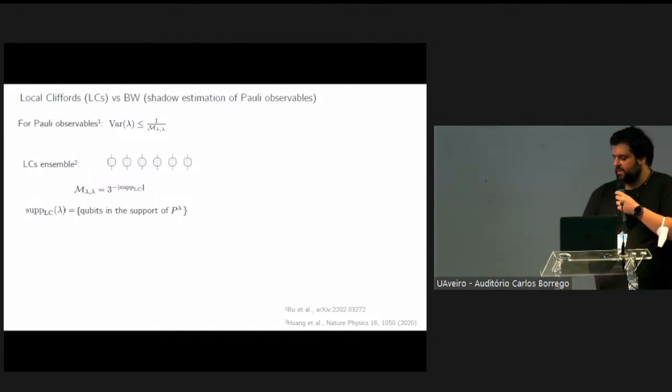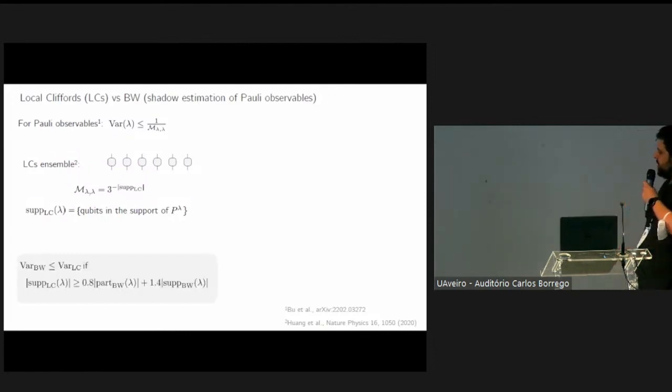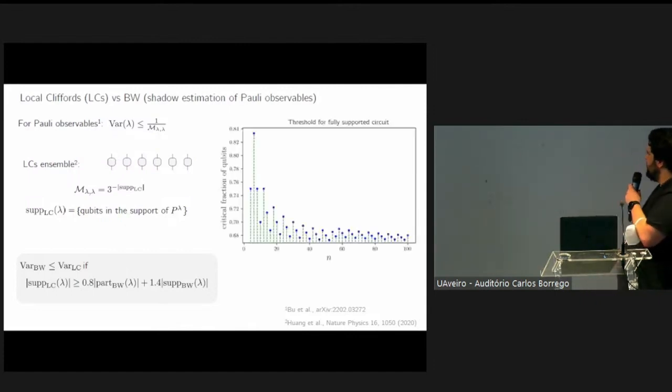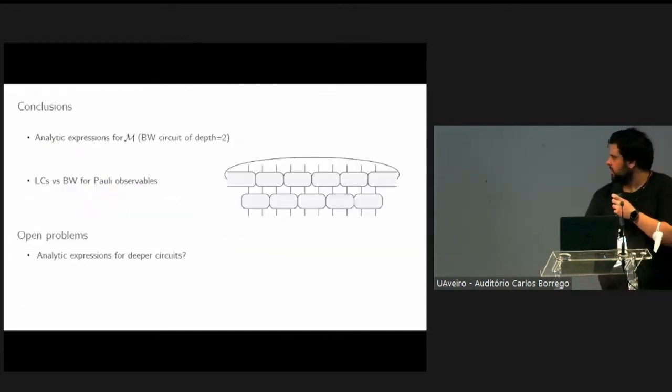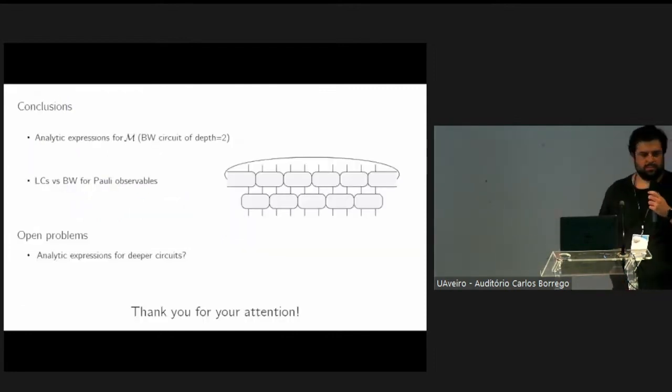What we observed is the following threshold criterion, which tells us that we have a sample complexity advantage using the brickwork shadows whenever the total number of qubits in the support of the observable satisfies this condition. It's basically a threshold, and here we have a simple plot where this threshold is evaluated for a fully supported circuit for up to 100 qubits. I can just conclude now and thank you for your attention.